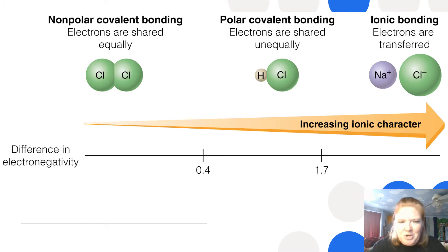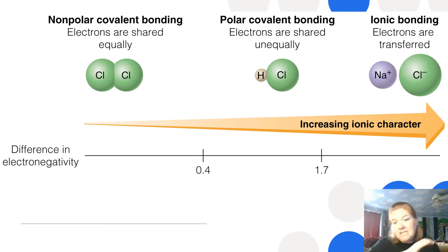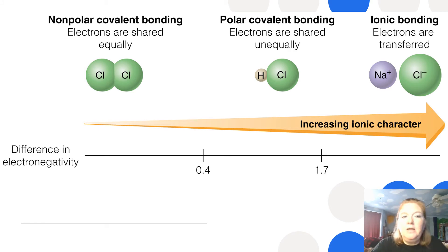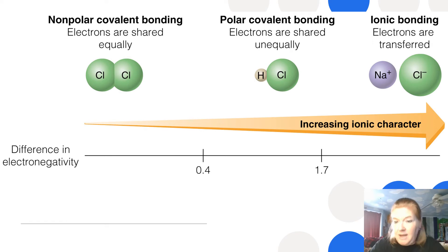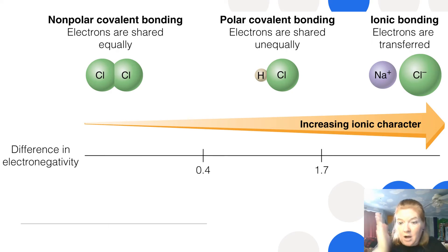It's important to note that it's more of a continuum — things can be more ionic or less ionic, more polar or less polar. In nonpolar bonds, electrons are shared equally. In polar bonds, they're shared unequally. In ionic bonding, there's a transfer of an electron. So something with an electronegativity difference of 0.5 would be less polar than something with a difference of 1.6 — it's a continuum more than a hard and fast rule.